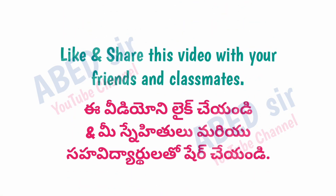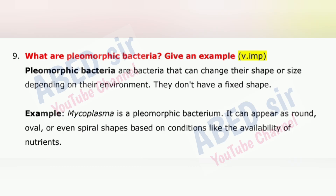Next important question is 9: What are pleomorphic bacteria? Give an example. Pleomorphic bacteria are bacteria that can change their shape or size depending on their environment — they don't have a fixed shape. For example, Mycoplasma is a pleomorphic bacterium. It can appear as round, oval, or even spiral shapes based on conditions like the availability of nutrients.